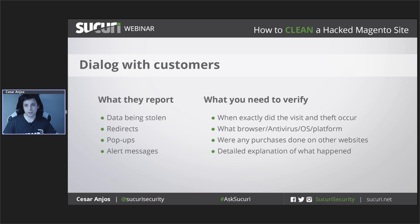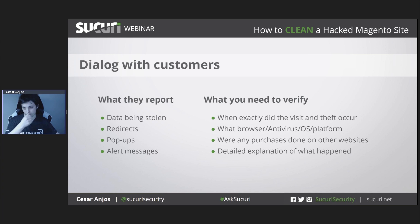If the report is about data theft, you may need to try to validate that it was actually through your website that it happened, and try to establish a time frame to assist the investigation. You can ask questions such as: was the card used on any other website? When exactly did the purchase take place? And so on. You can also take proactive measures — for example, you just try to make a purchase yourself on your website. But if you use your own credit card on a potentially infected website, it's very risky. I'll get into a more secure way to do this in a minute.